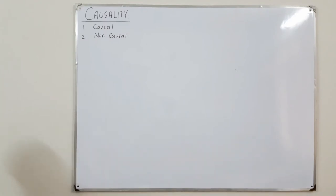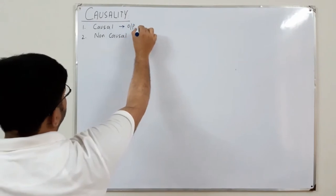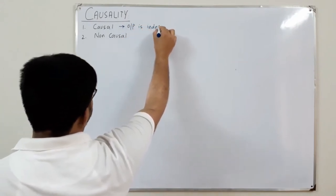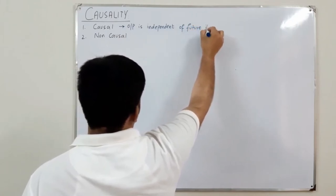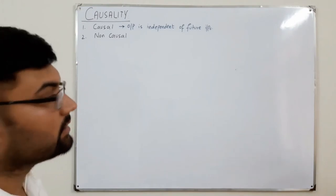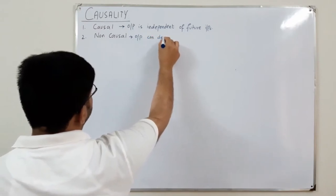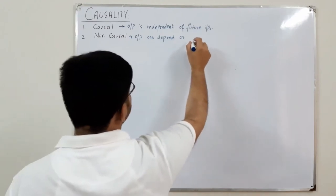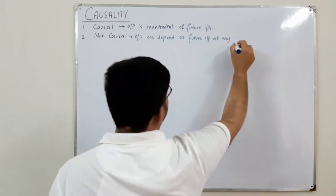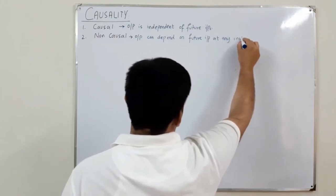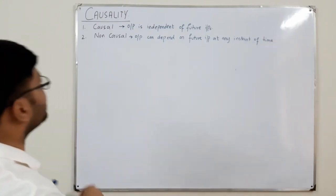In a causal system, the output is independent of future inputs. In a non-causal system, the output can depend on the future input at any instant of time. Even if it depends on the future at a single instant, it is still a non-causal system.